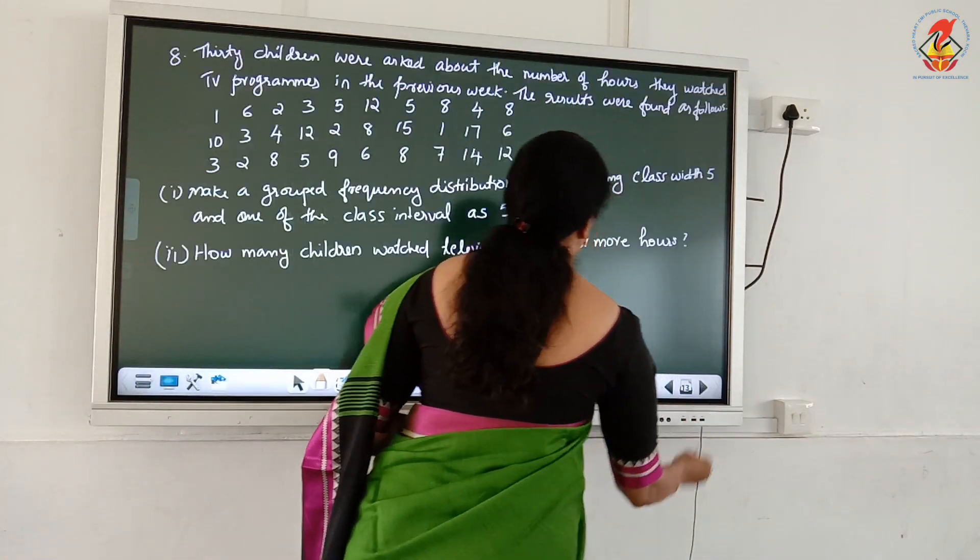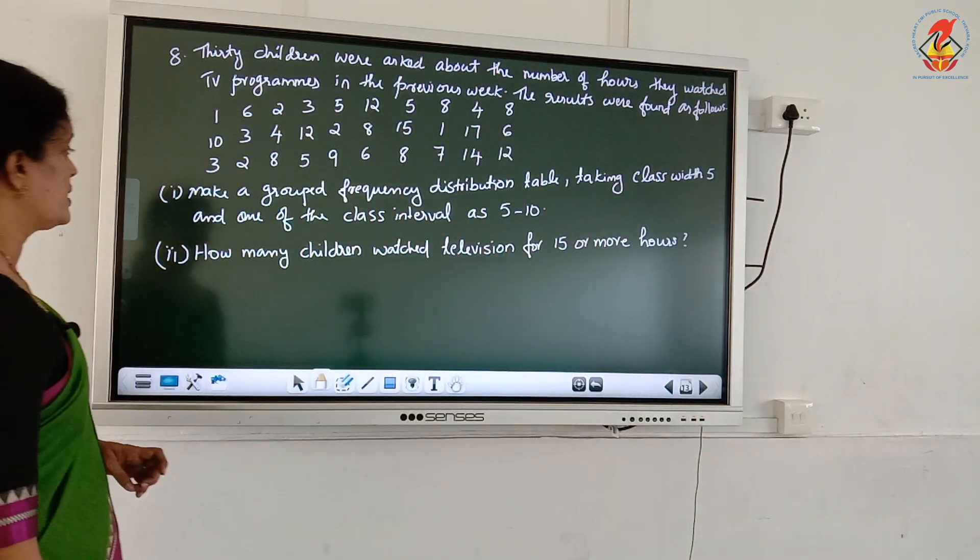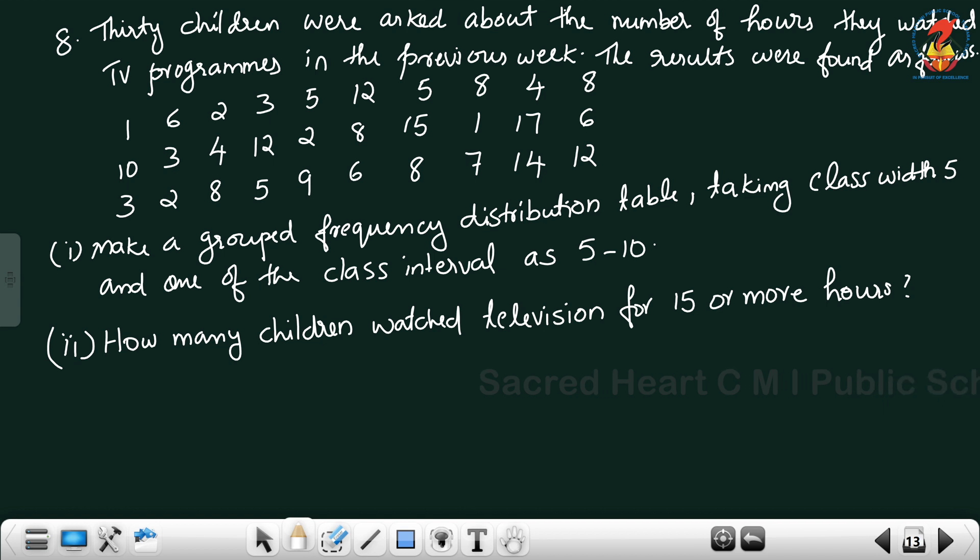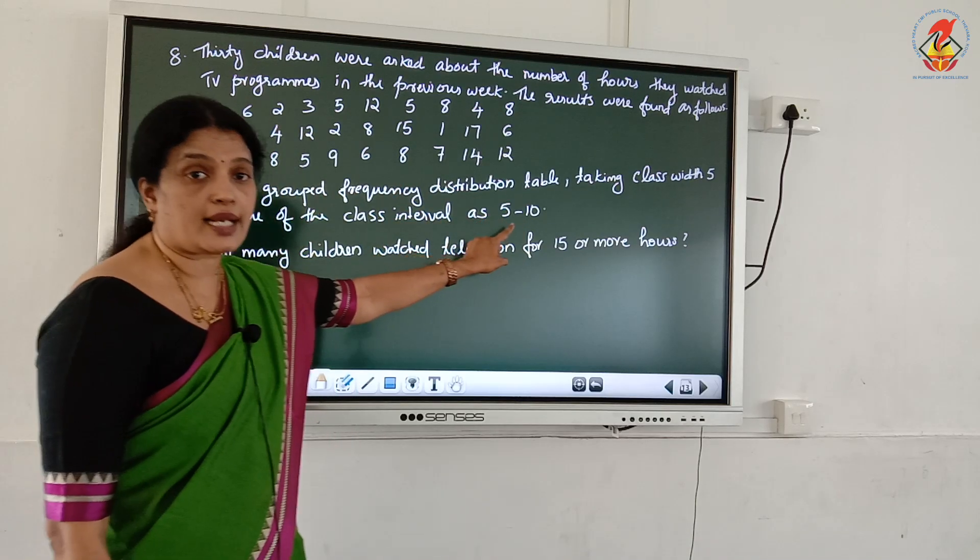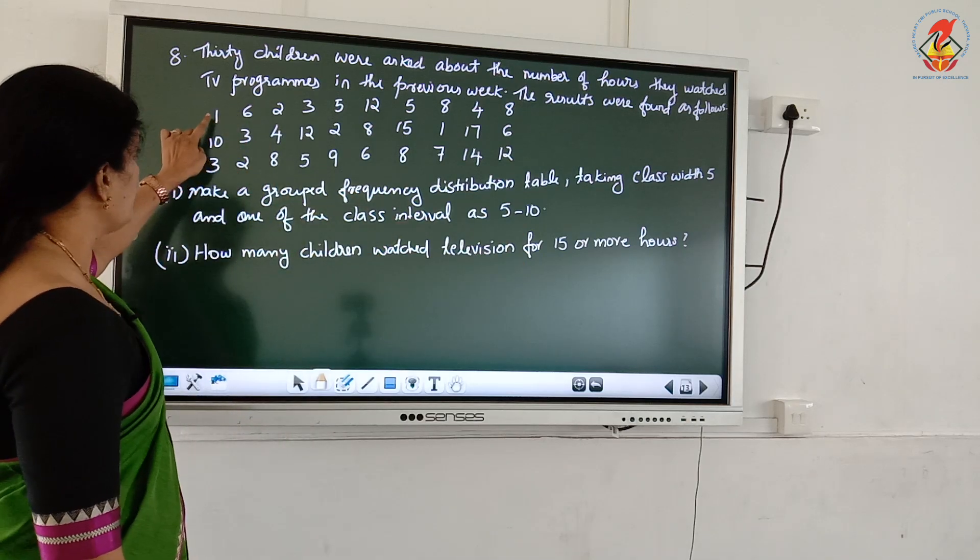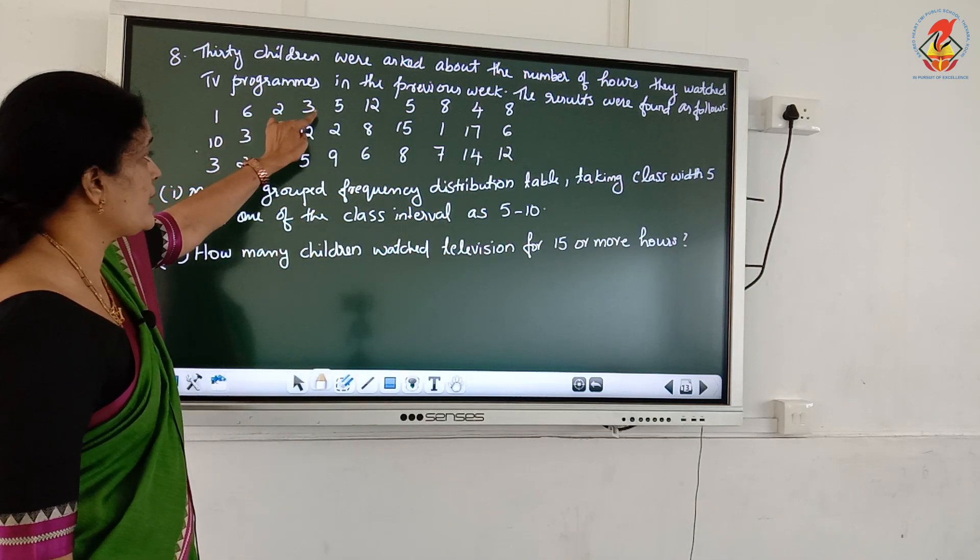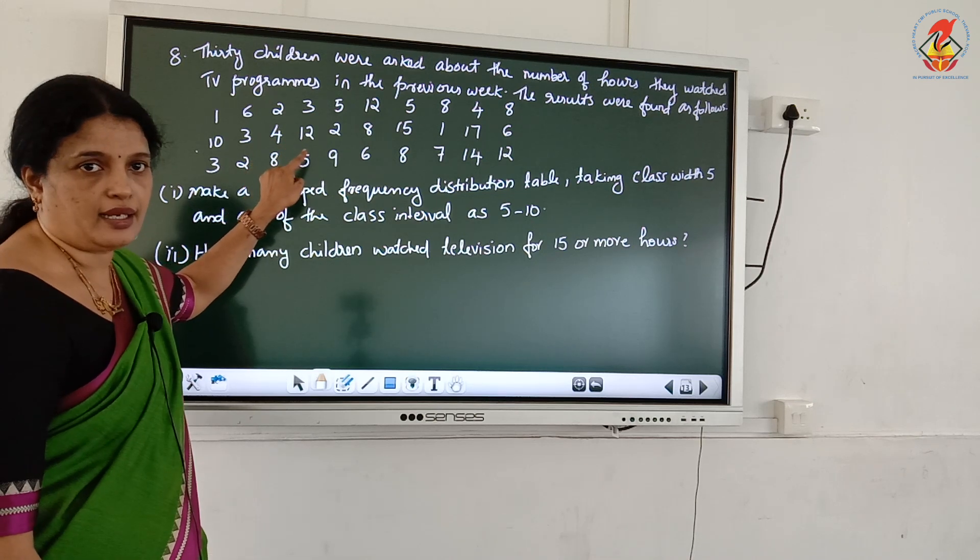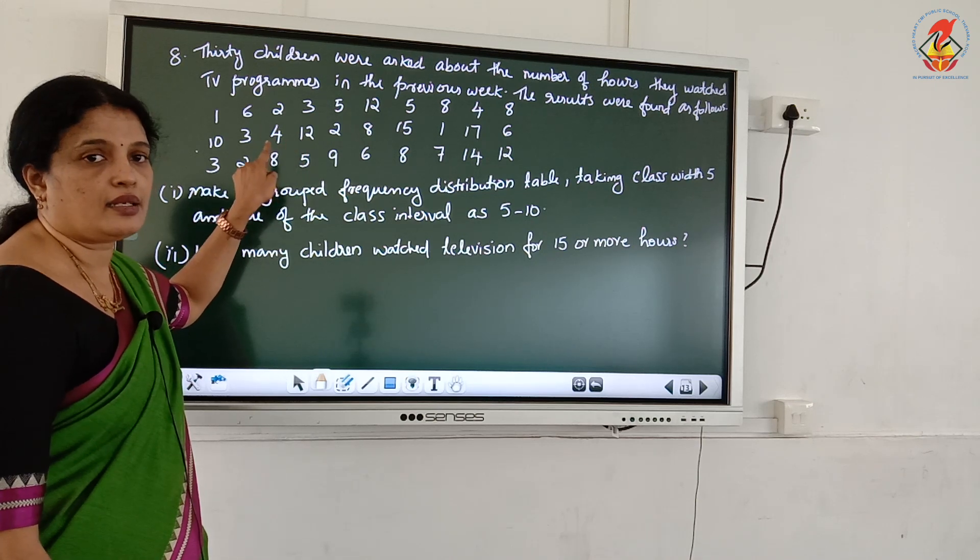Question 8: 30 children were asked about the number of hours they watched TV programs in the previous week. The results were found as follows. Make a grouped frequency distribution table taking class width 5, and one of the class intervals as 5 to 10. But this is not the first class interval because 1 hour, 2 hour, 3 hour are also included in this data. We should consider that number also.